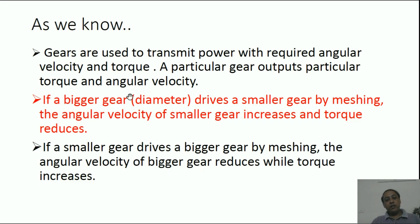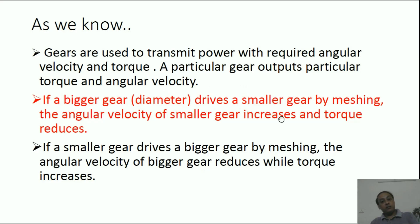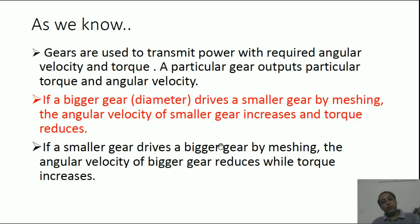If a bigger gear, in terms of diameter, drives a smaller gear by meshing, the angular velocity of the smaller gear increases. If a bigger gear drives a smaller gear then angular velocity increases, however torque reduces. And if a smaller gear drives a bigger gear by meshing, the angular velocity of the bigger gear reduces while the torque increases.